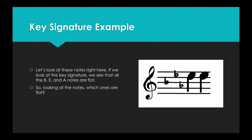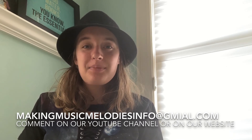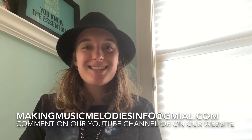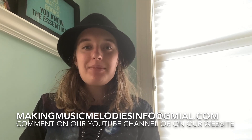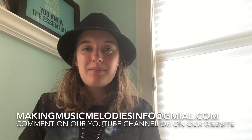Let's see an example. If we look at the key signature, we see that the B, E, and A notes are all going to be flat. So looking at the notes, which ones are flat? Since those two E notes correspond with the E flat, those two notes are both flat. Don't worry if you don't know the names of the notes yet — those will be explained in a later video. If you have any questions, please don't hesitate to email us at makingmusicmelodiesinfo@gmail.com, comment on our YouTube channel, or visit our website. Thank you for watching. See you next time.